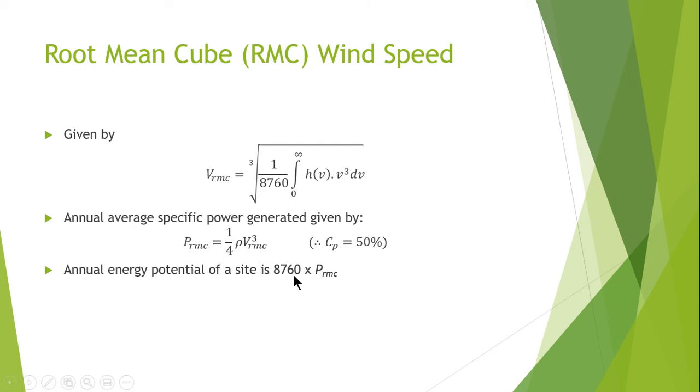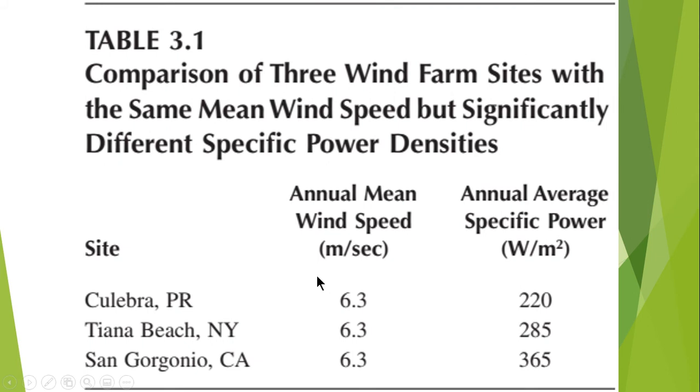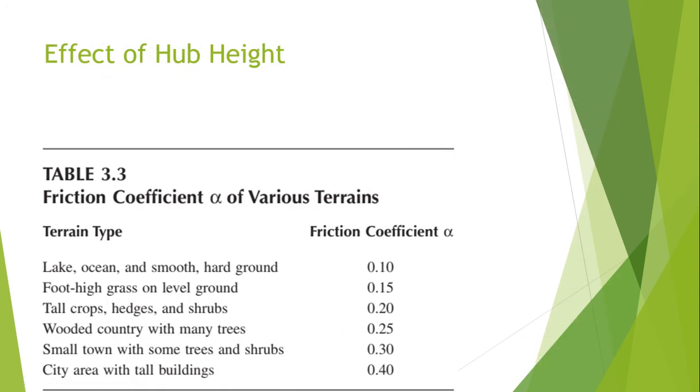This is a comparison of wind farm sites which have the same wind speed but significantly different specific power density. For example, San Gorgonio, Tiana Beach, and Culebra all have annual mean wind speed of 6.3 meters per second, whereas their annual average specific power given in watts per meter square is different, with one being the lowest and one the highest.